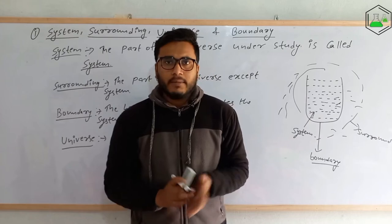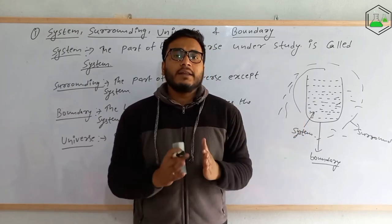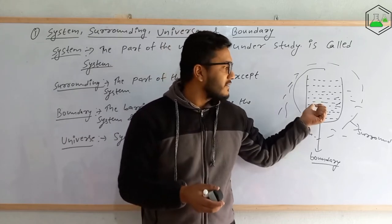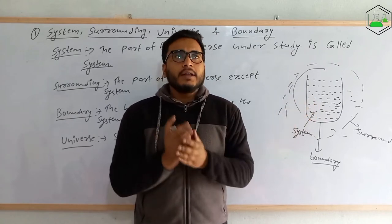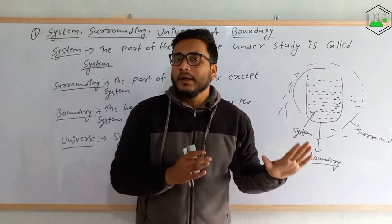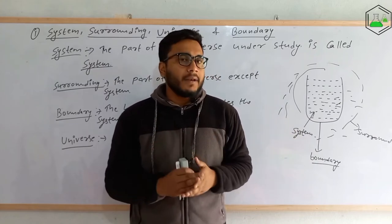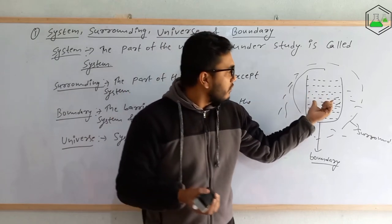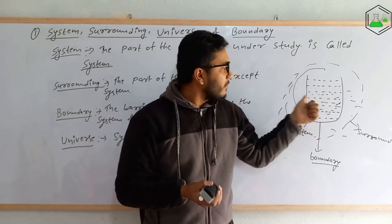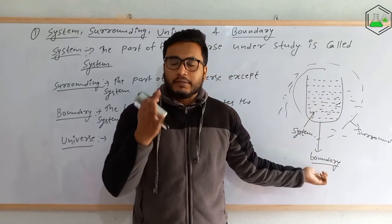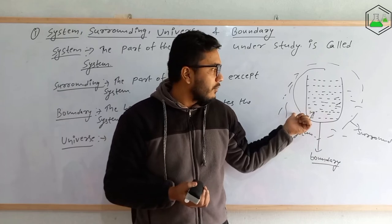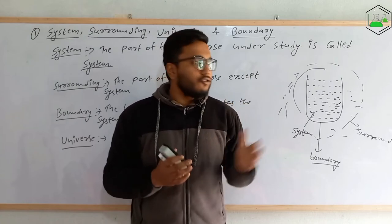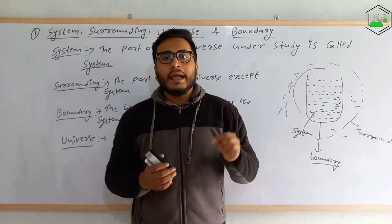So, the system is the part of the universe that is under study. Any change of variables — that is pressure, temperature, volume — is taken in the system only. The part of the universe except the system is called surrounding. The boundary, which may be an imaginary line, is the barrier which separates system and surrounding. And the universe is the combination of system and surrounding. I hope you understood about system, surrounding, boundary, and universe.